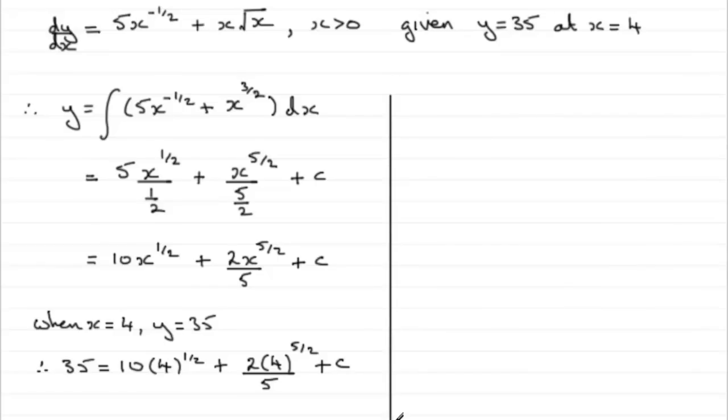So we'll just come down here now. So we've got 35 equals, and if you've got anything to the power half, remember that means the square root. Square root of 4, which is 2, 10 twos are going to be 20.